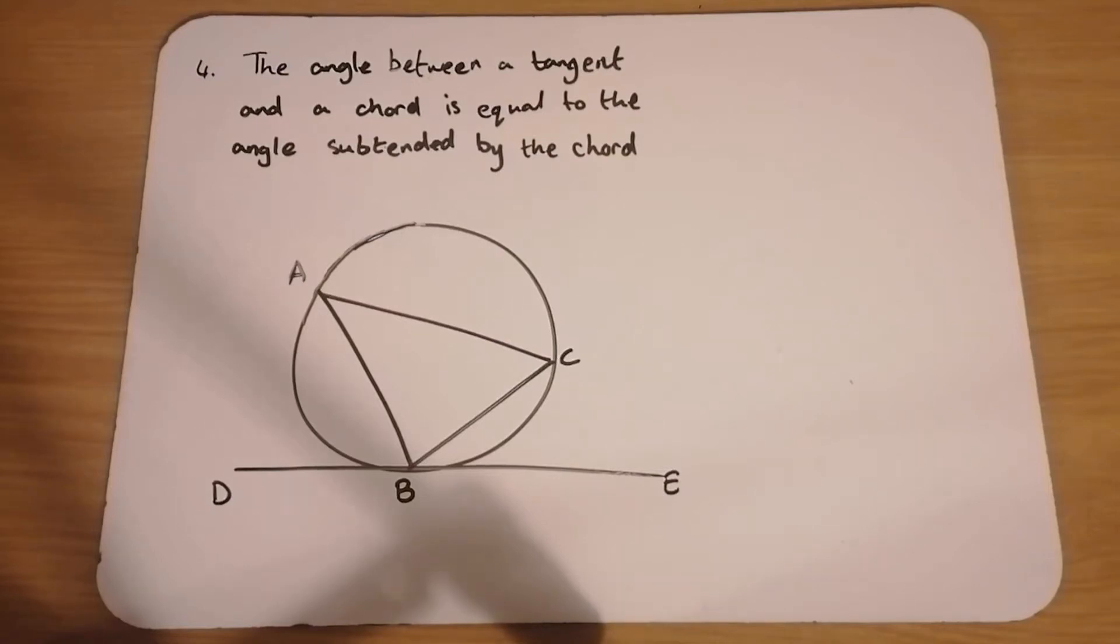This is the last formal proof you need to know for circle geometry. The angle between a tangent and a chord is equal to the angle subtended by the chord.